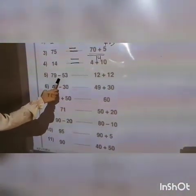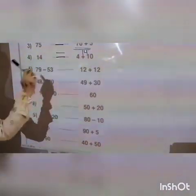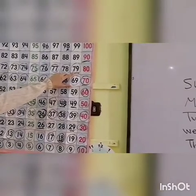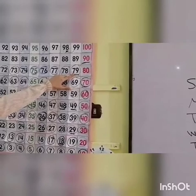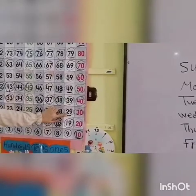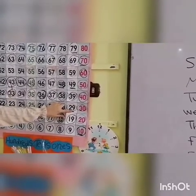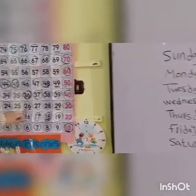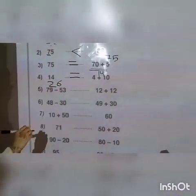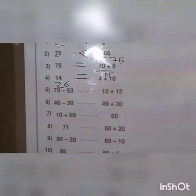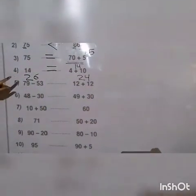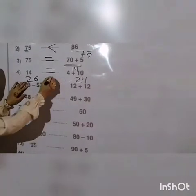Number five: seventy-nine minus fifty-three, and twelve plus twelve. Stand on seventy-nine; minus fifty-three — five in the tens, so go down five steps: the number will be twenty-nine. Then three in the units, go backwards three steps — the number will be twenty-six. Twelve plus twelve by doubling strategy equals twenty-four. Here we have twenty-six and twenty-four — twenty-six is more than twenty-four.